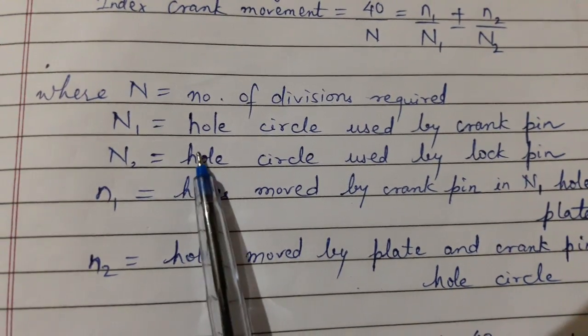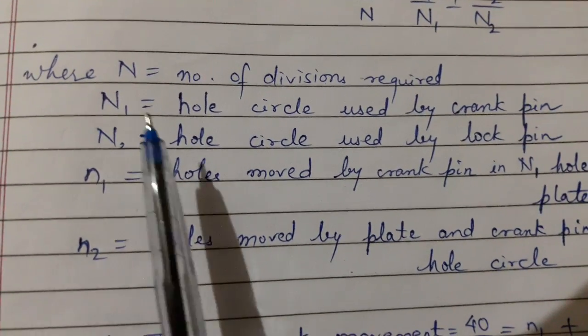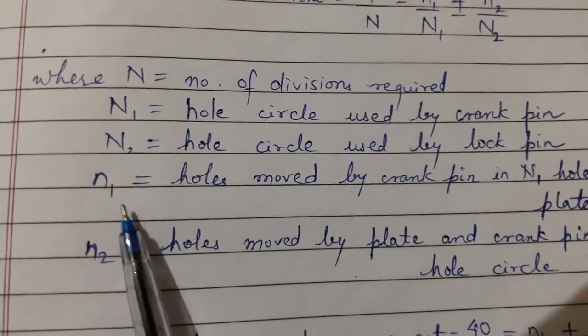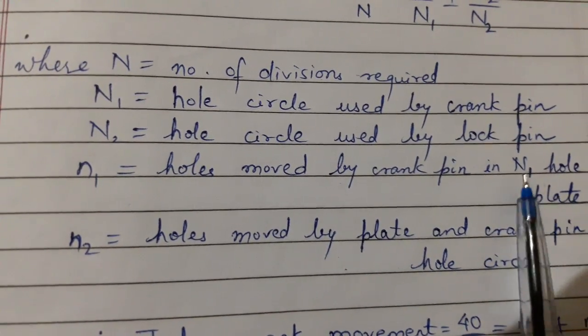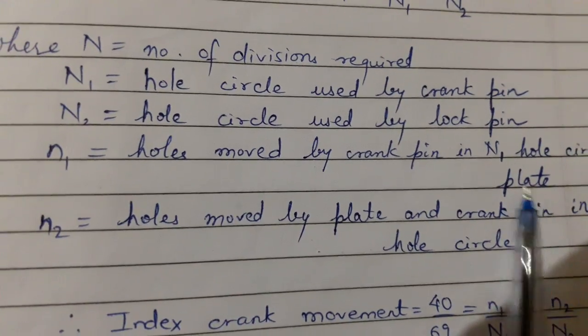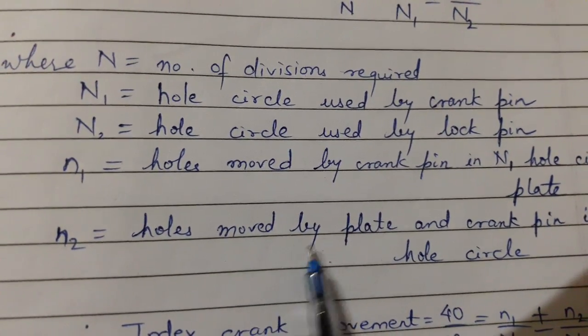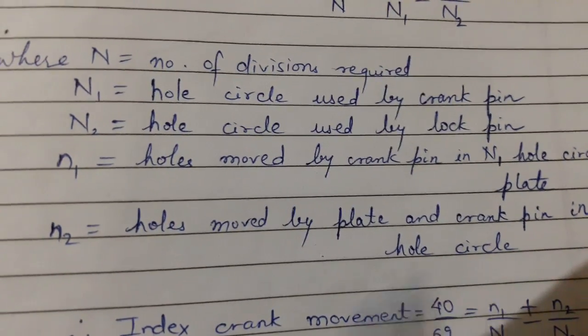Capital N1 is the whole circle used by the crank pin and capital N2 is the whole circle used by the lock pin. So small n1 is holes moved by crank pin in N1 hole circle plate, and small n2 is the holes moved by plate and crank pin in N2 hole circle.